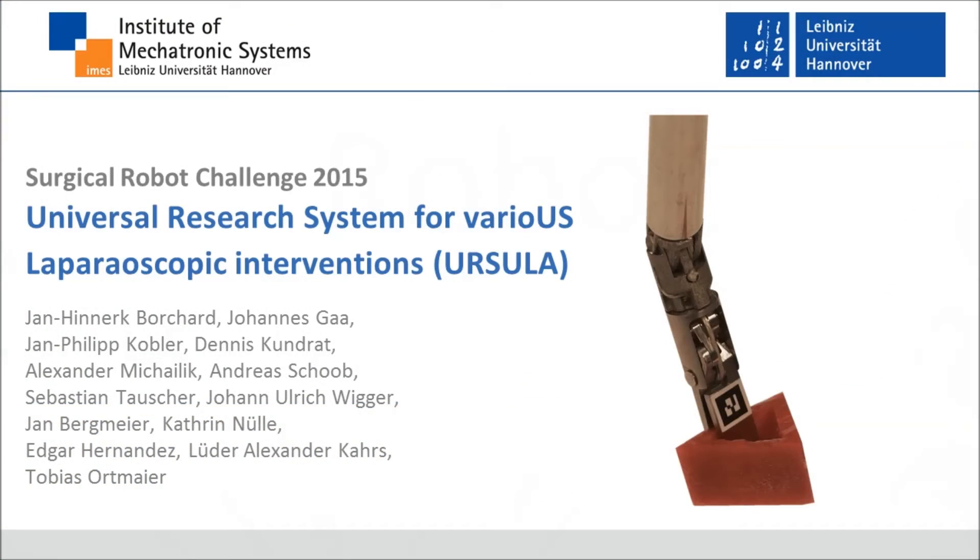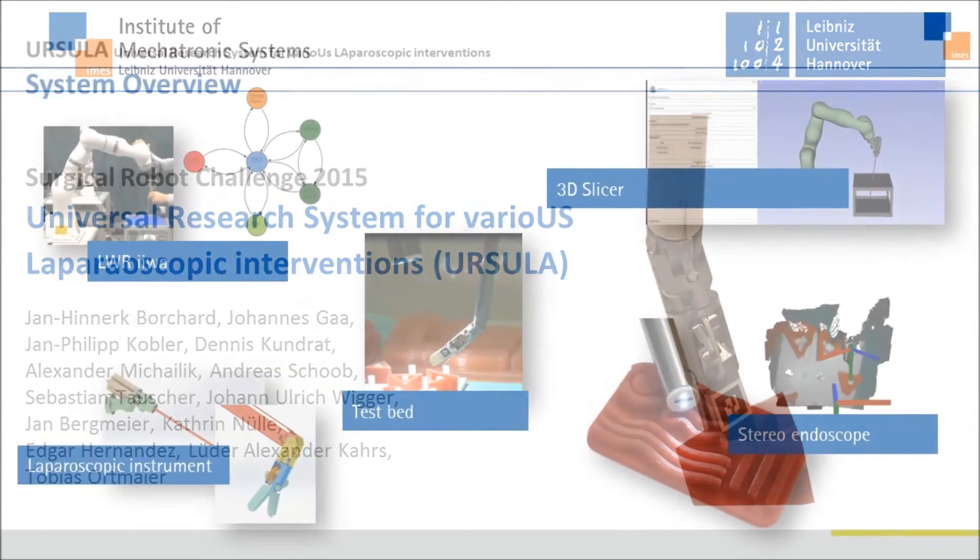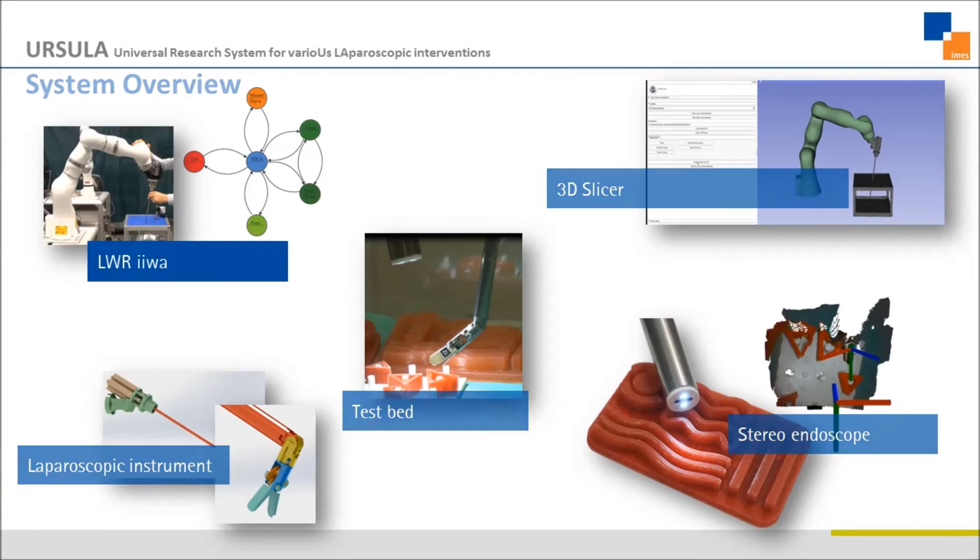Our universal research system for various laparoscopic interventions is called URSULA. We use the KUKA lightweight robot IWA in combination with our self-made components.